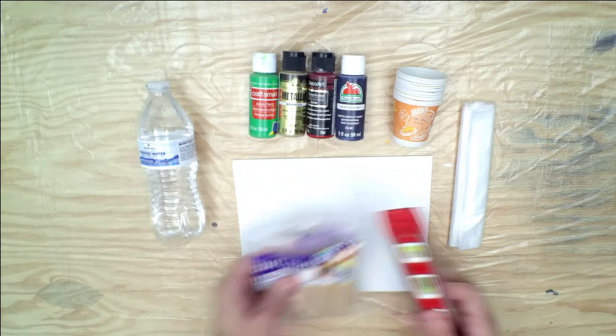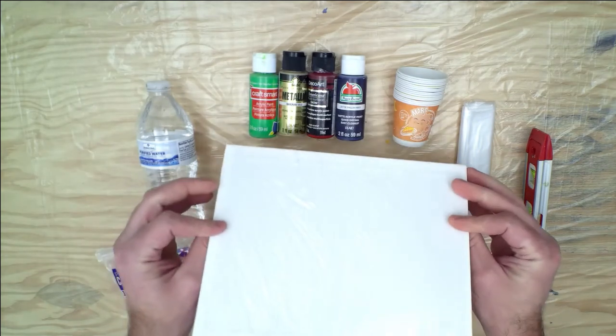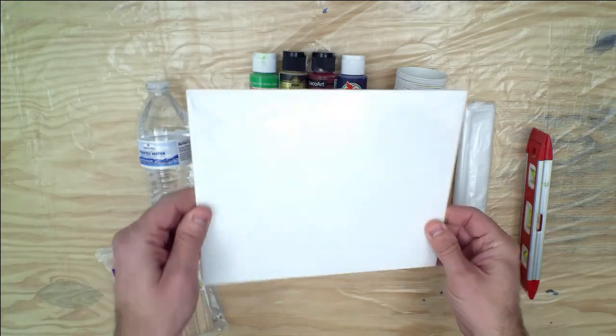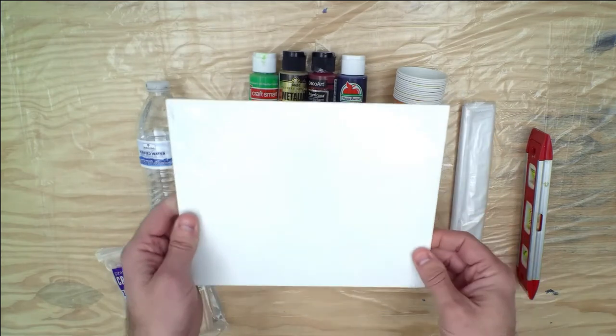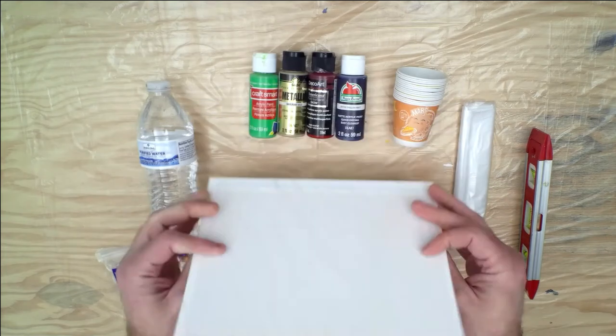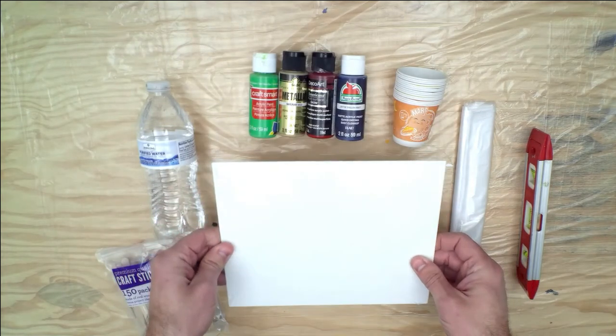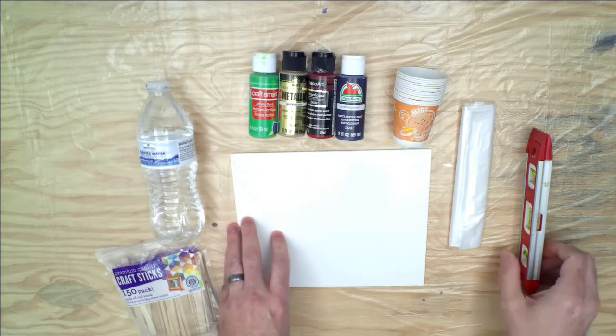You need a painting surface. This is a canvas board. You can use wood from home. I have done that before. The nice thing about this is it's pre-gessoed so you don't really have to add a base layer which is the gesso that we'll talk about in a minute also. And they're relatively cheap. You can get a bunch of these for a couple dollars at Walmart or Hobby Lobby or Michaels or any place like that.